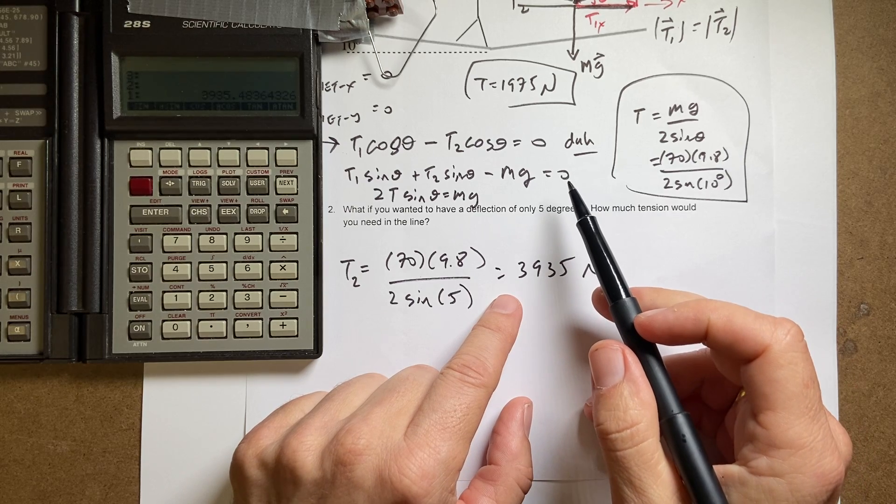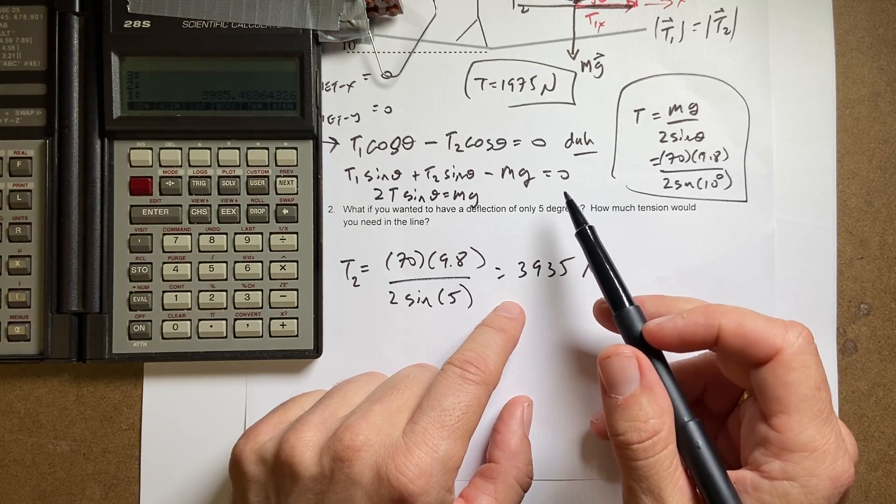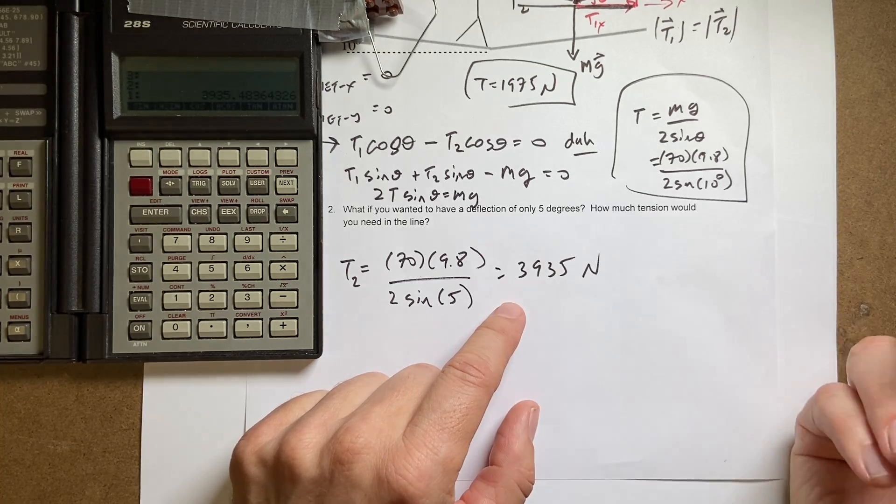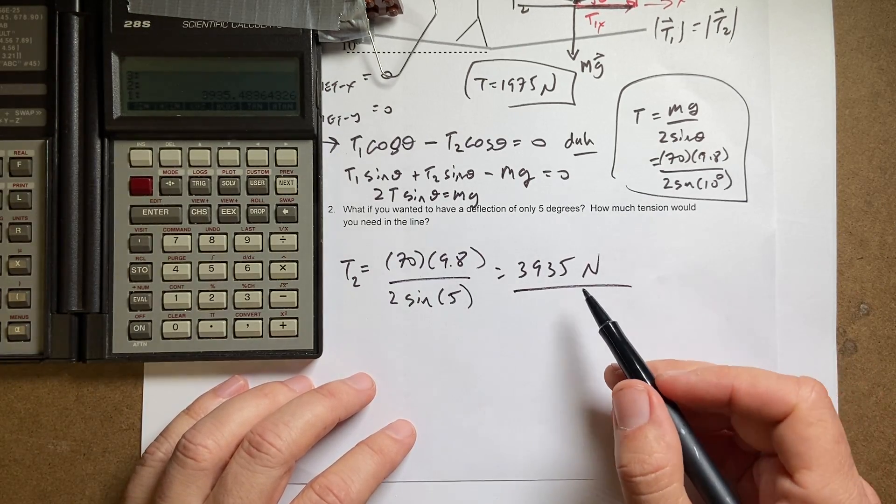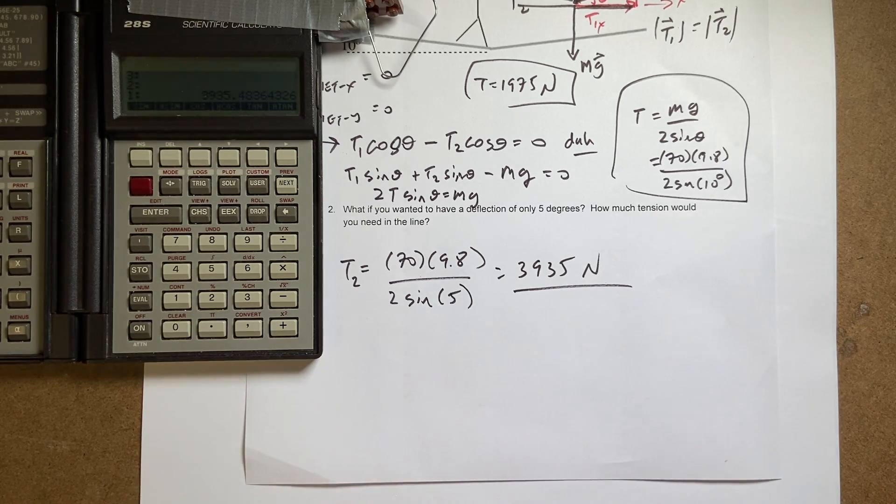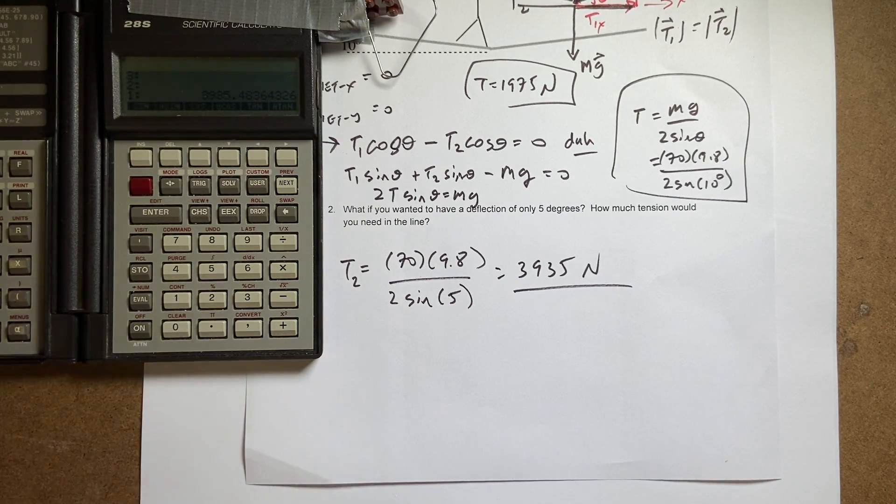So it's almost double as much. And that's because near theta equals 0, the sine function's fairly linear. So if you decrease the angle by half, you're going to increase the tension by almost two. So you can see if you want to have zero degrees, the sine of zero is zero and you'd have to have an infinite tension. Okay. Mathematicians don't listen to that. I was just joking. It gets really high though. Okay. The end.